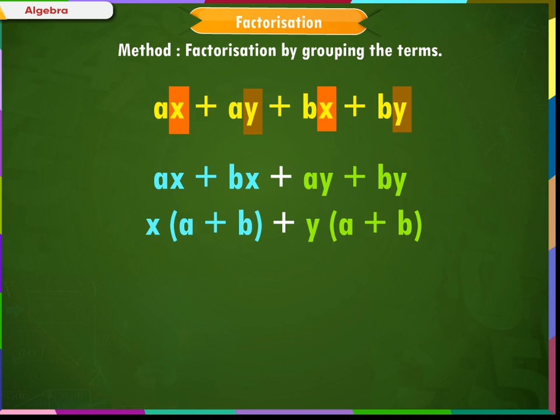Now, in these two terms, we see that A + B is a common factor. So, we can write it as (A + B)(x + y).